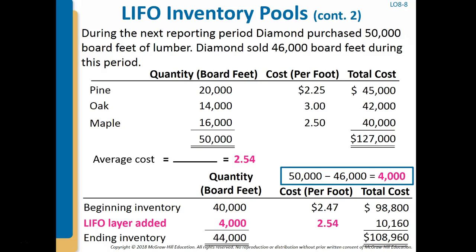Now assume that during the next reporting period, Diamond purchased 50,000 board feet of lumber. The average cost of this pool is $2.54 per board foot, which is $127,000 divided by 50,000 board feet. Assuming that Diamond sold 46,000 board feet during the period, the quantity of inventory for the pool increased by 4,000 board feet — the 50,000 purchased less the 46,000 sold. The ending inventory would include the beginning inventory and a LIFO layer consisting of the 4,000 board foot increase, valued at the average cost of $2.54. The ending inventory of $108,960 now consists of two layers.